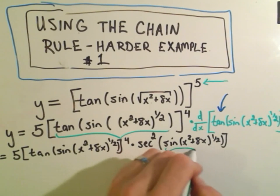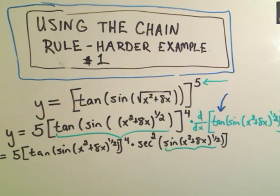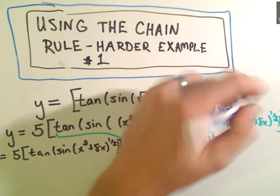So the stuff we haven't touched yet was the sine, x squared plus 8x raised to the one-half power. Well, in this case, the thing that's next on, the next part in order that we didn't touch yet would now be the sine part.